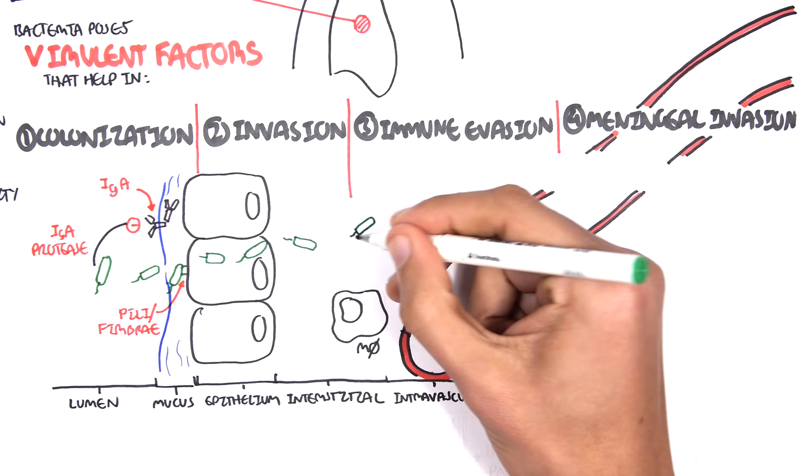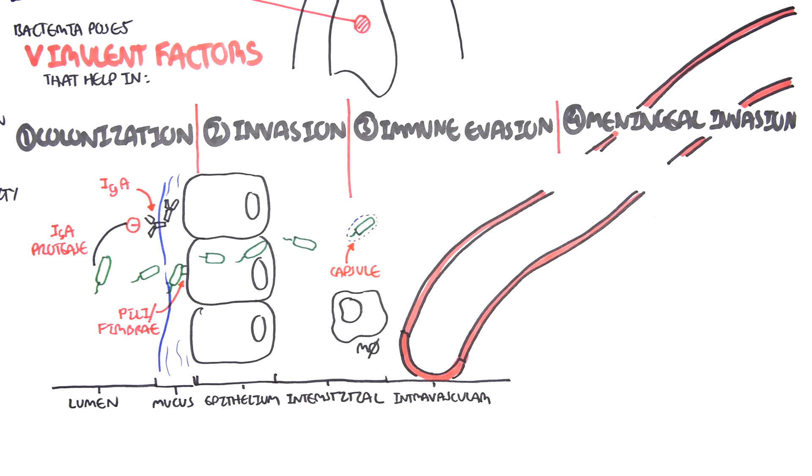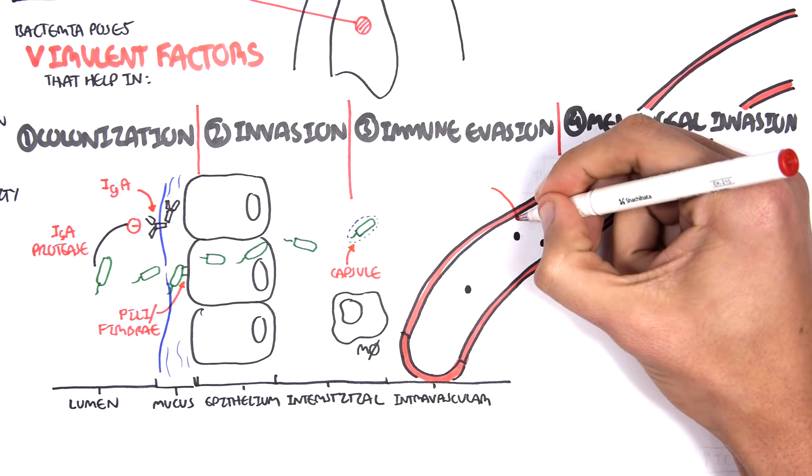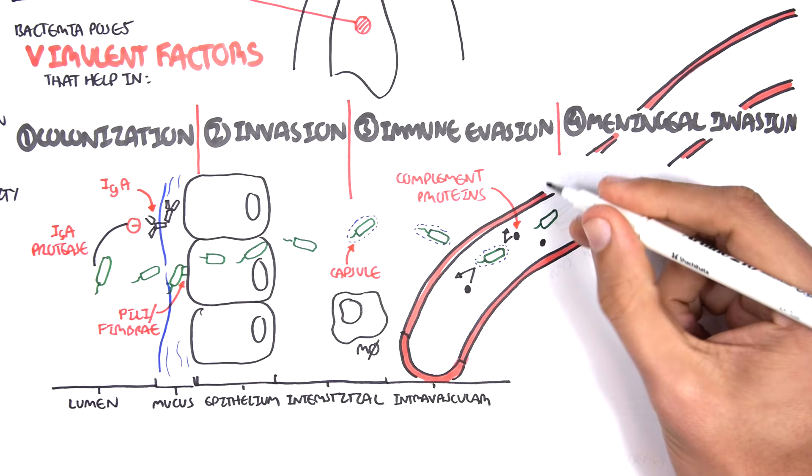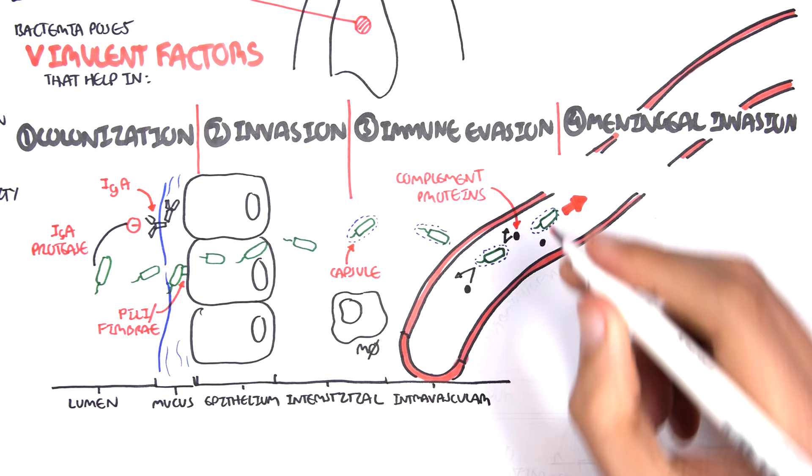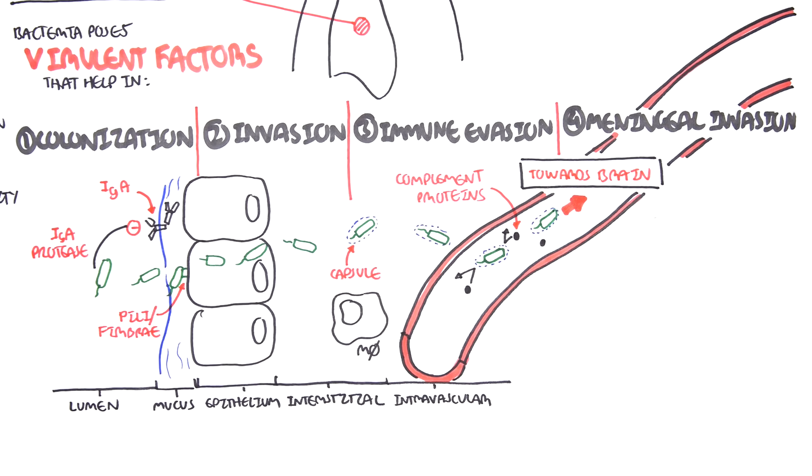Some bacteria have virulent factors or mechanisms which allow them to evade the immune system. For example, the bacteria group B Streptococcus and Streptococcus pneumoniae have a capsule, which allows it to evade macrophages as well as complement factors around the area. The bacteria can enter the bloodstream, causing bacteremia, and then it can travel towards the brain. And this is, of course, the hematogenous spread. It's important to know that the bacteria can invade the meninges through hematogenous spread, so through the blood, directly from sinusitis or bone infection, or it can go through the cerebrospinal fluid. And this is the scenario that we will look at.